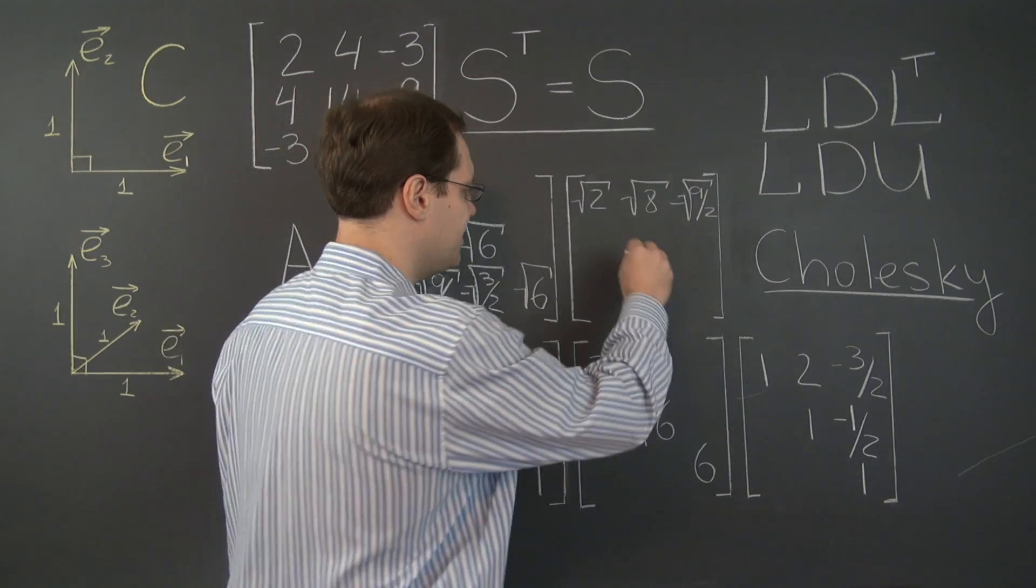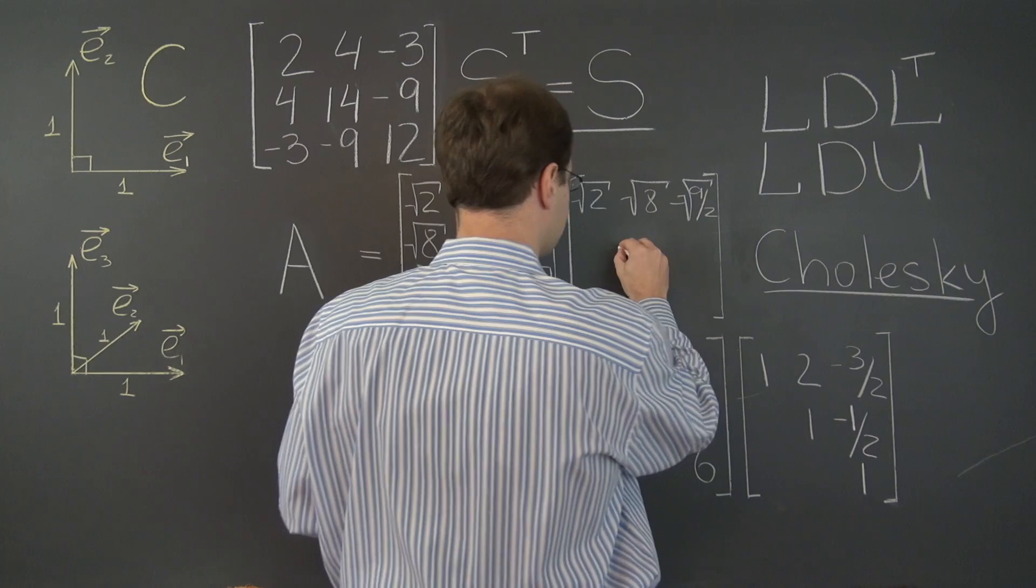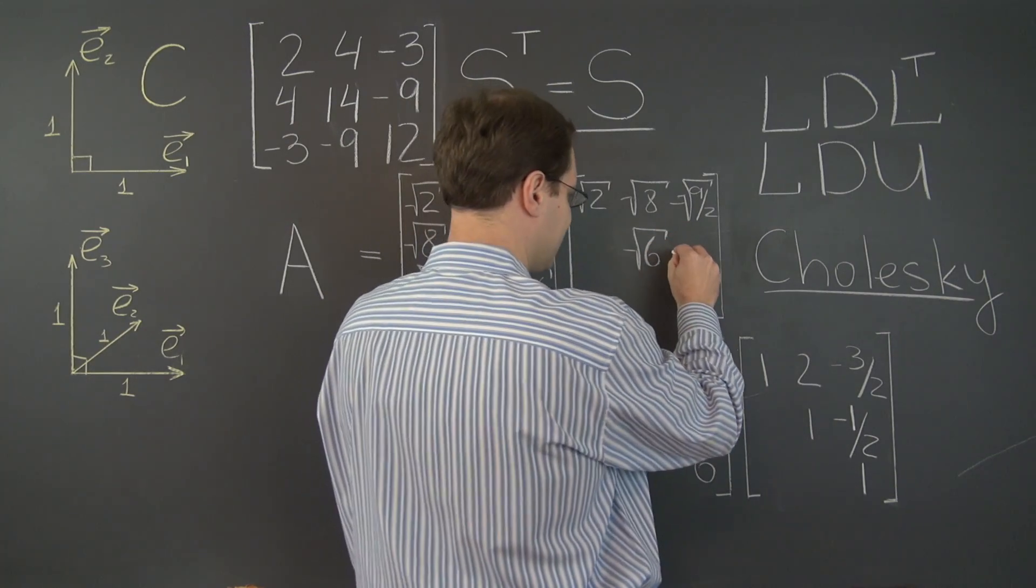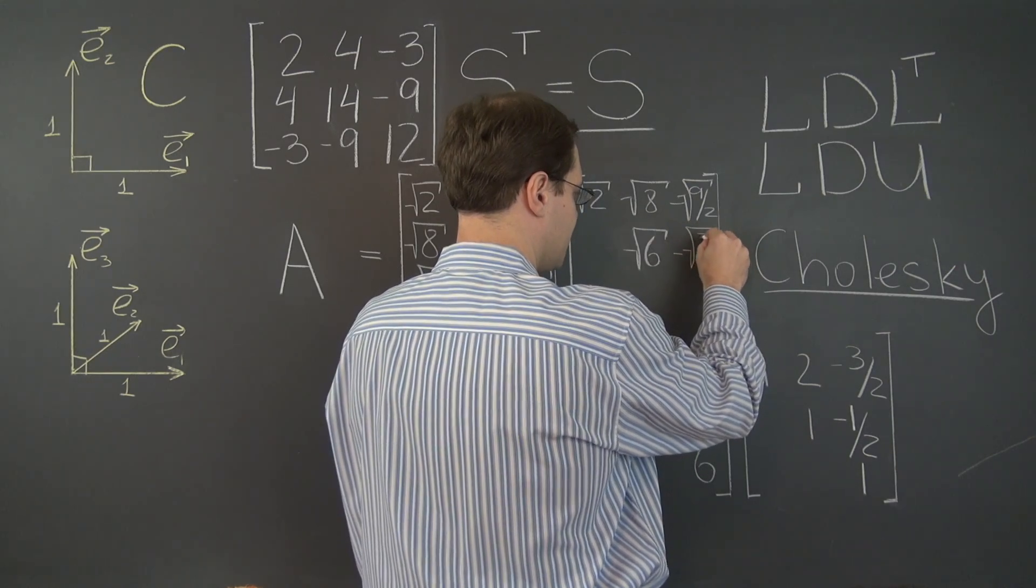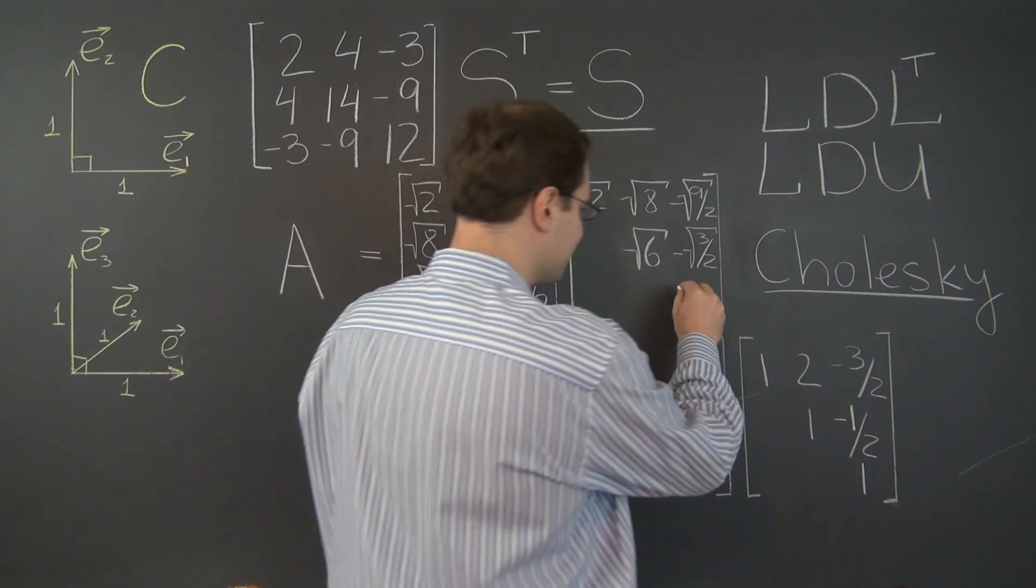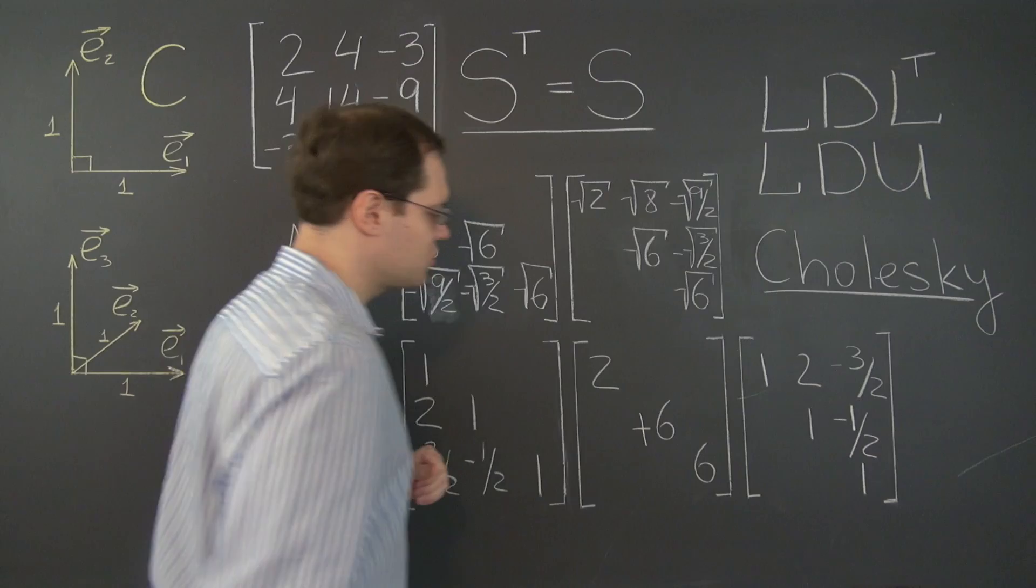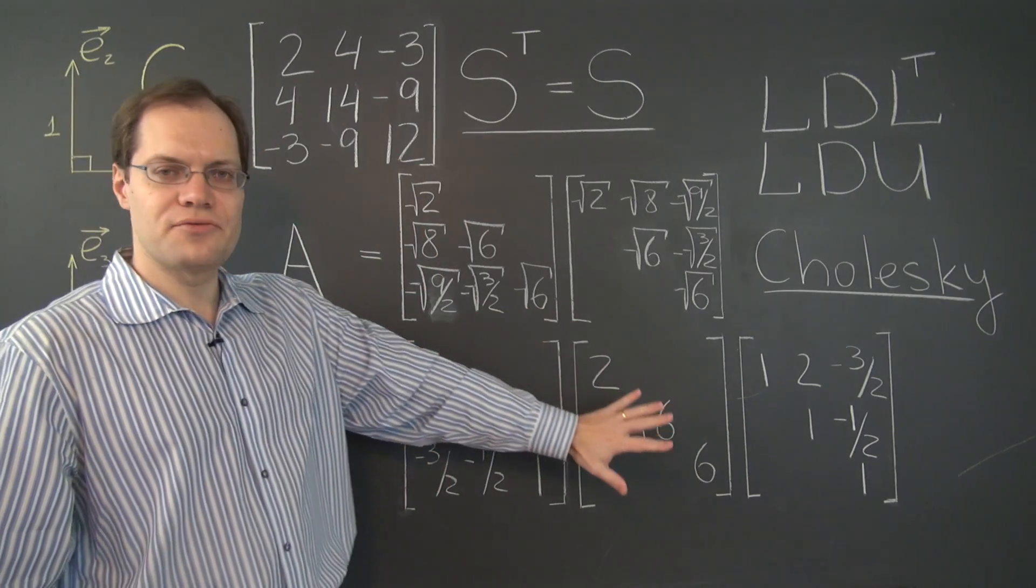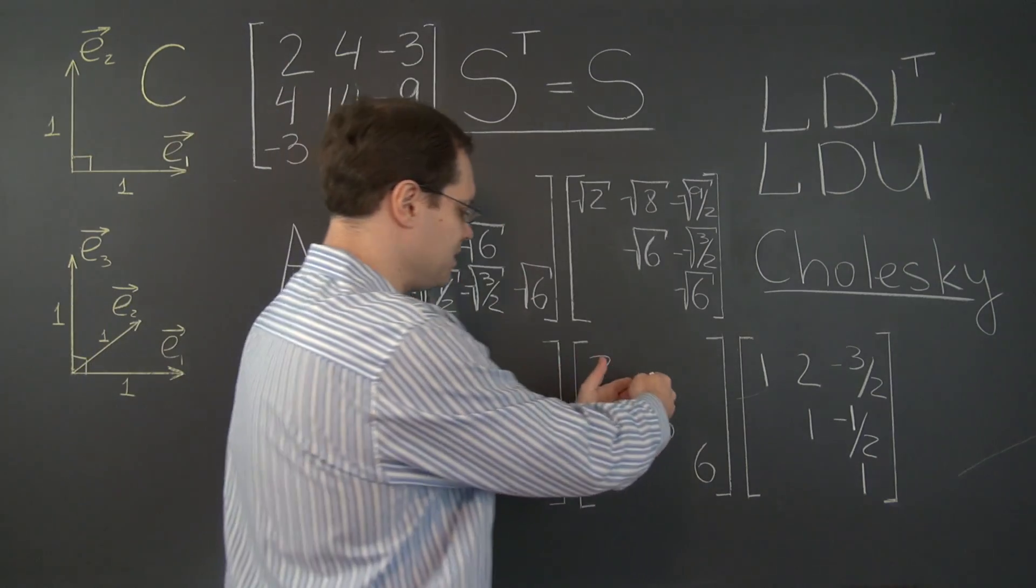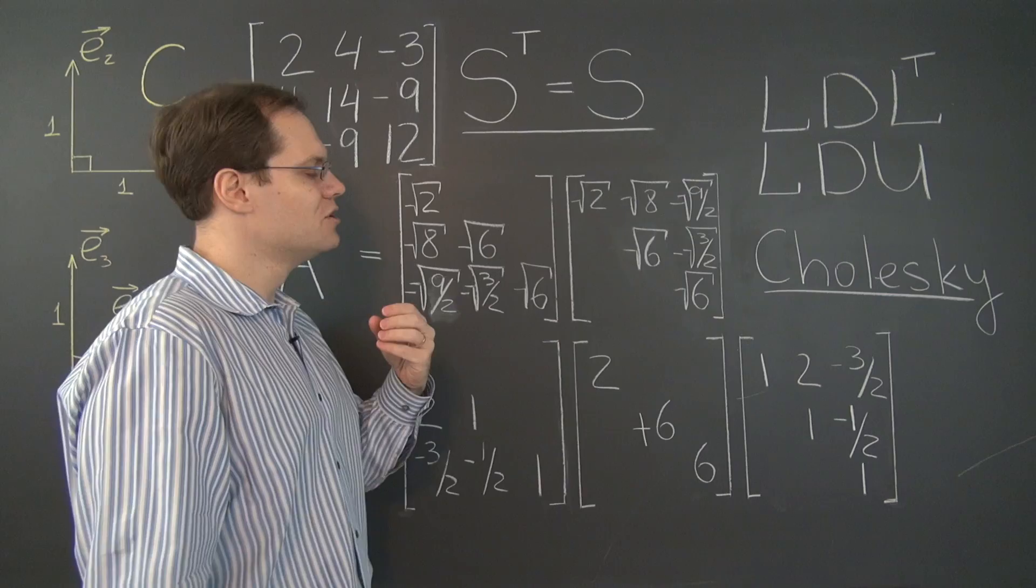And same thing here. The second row gets multiplied by square root of 6. And we have 6. And then negative square root of 3 halves. Same as here. Yep. And finally, last row gets also multiplied by square root of 6. So we have square root of 6. So three matrices have been converted into two matrices by splitting the middle matrix in half, so to speak, into two square roots.